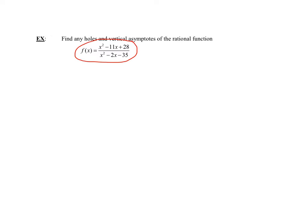Let's look at our first example. Here I have a rational function — a polynomial divided by a polynomial. Step one is to factor the numerator and denominator. This is a fairly easy one as the leading coefficient is one. I need two numbers that multiply to positive 28 and add to negative 11. Since they multiply to a positive and add to a negative, both signs must be minus — negative 7 and negative 4.